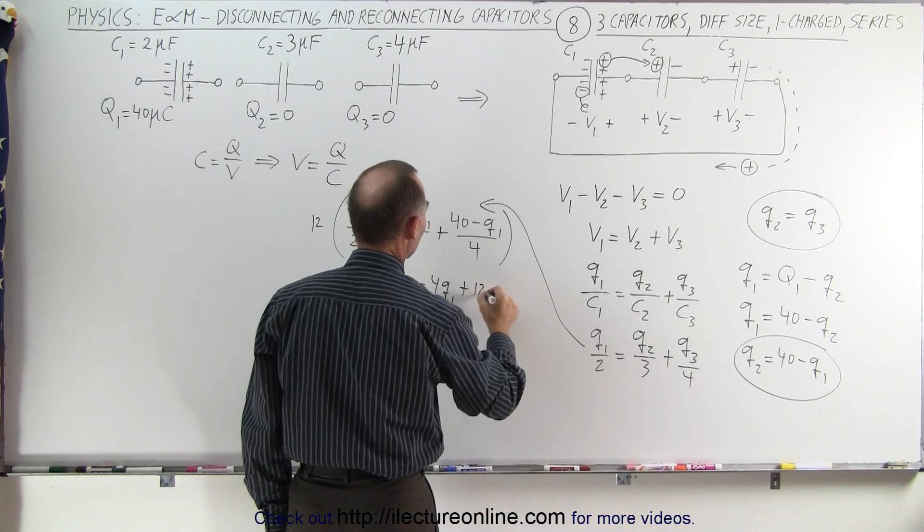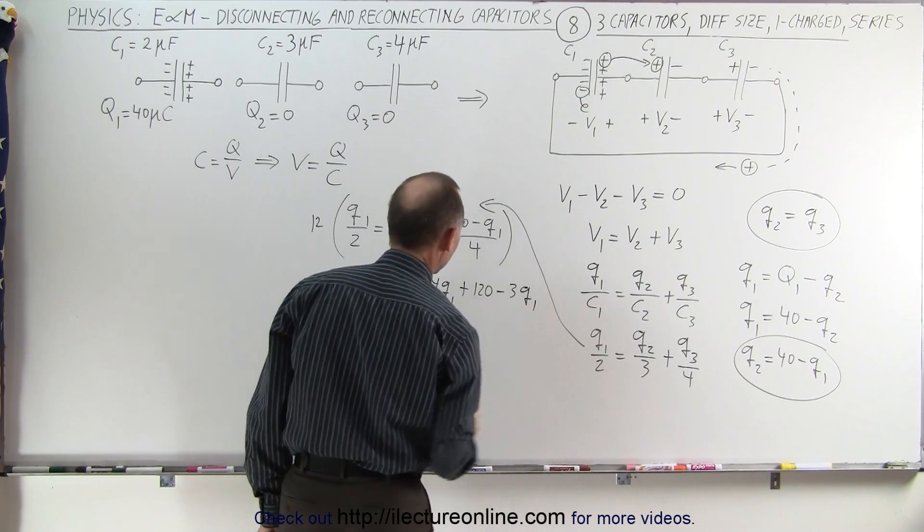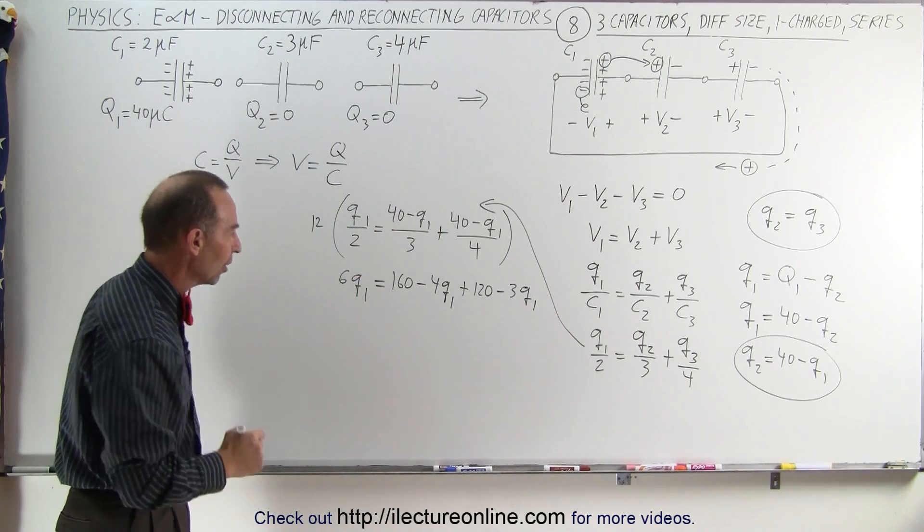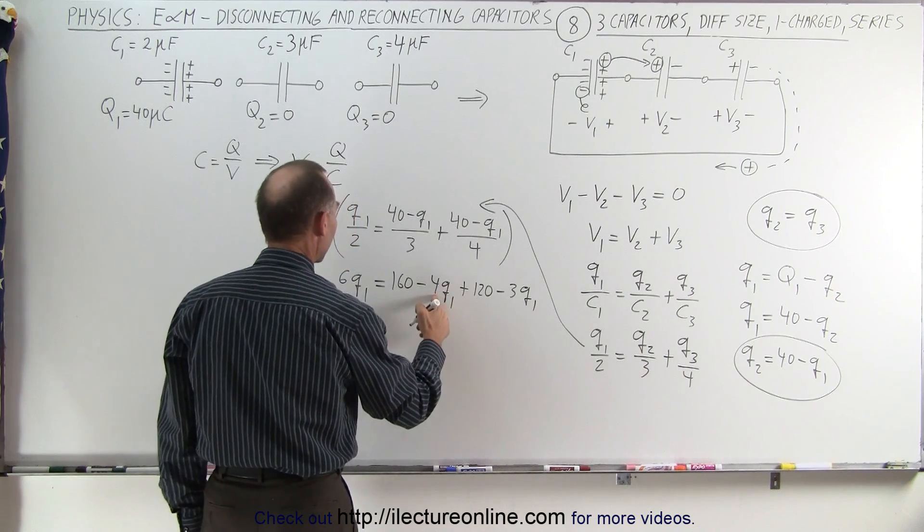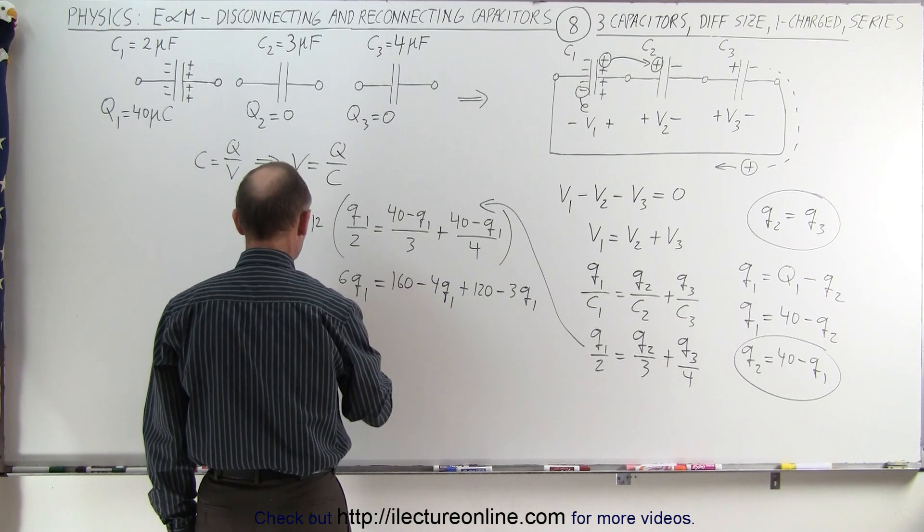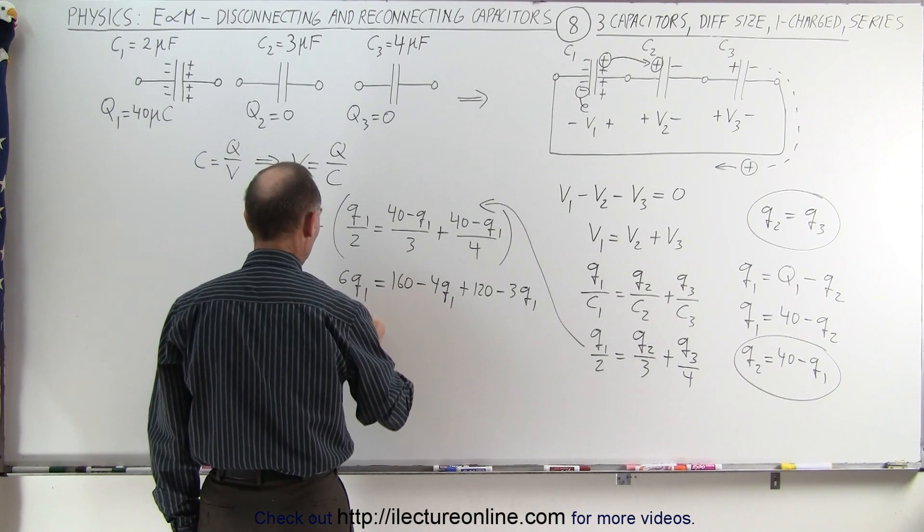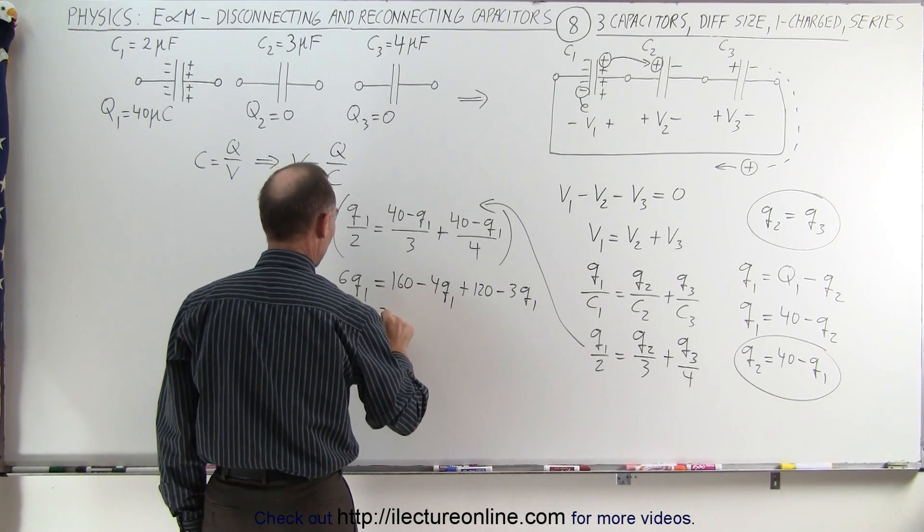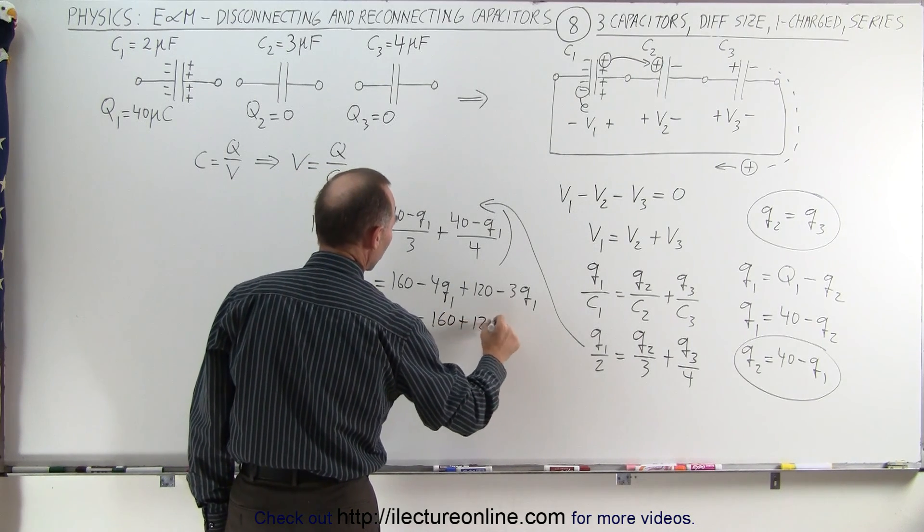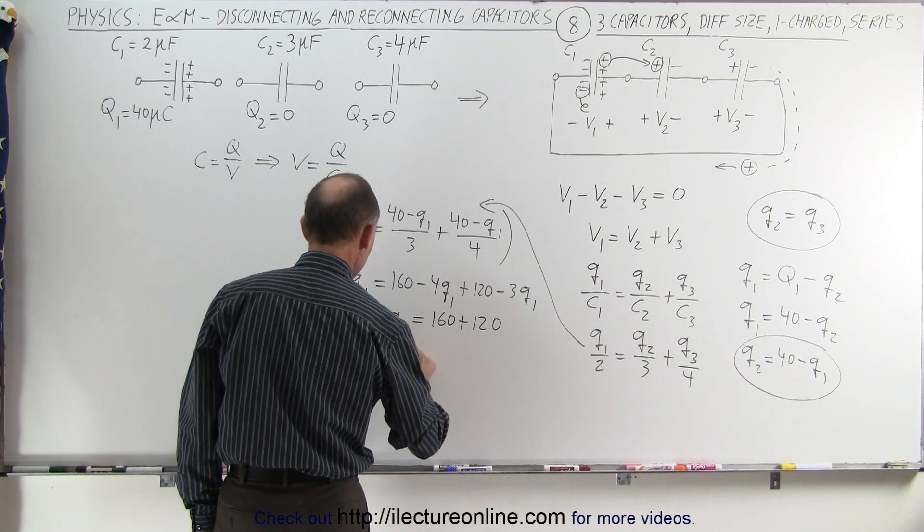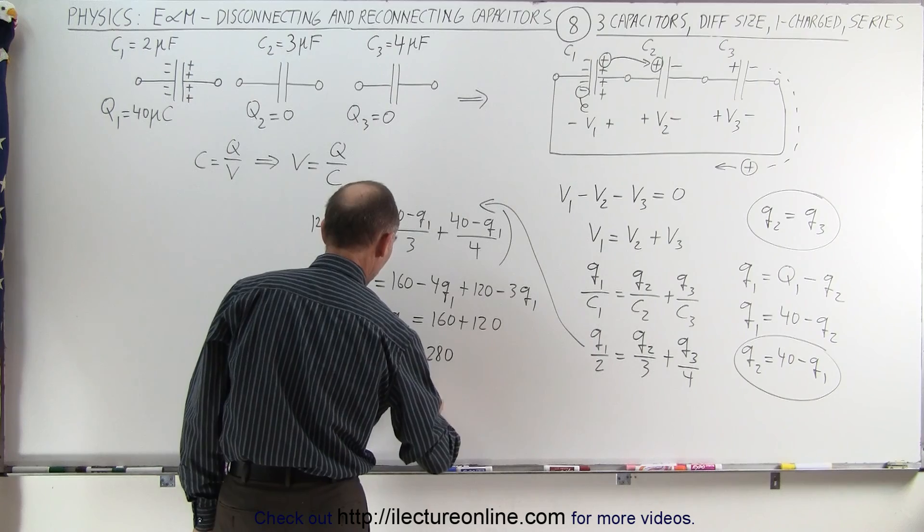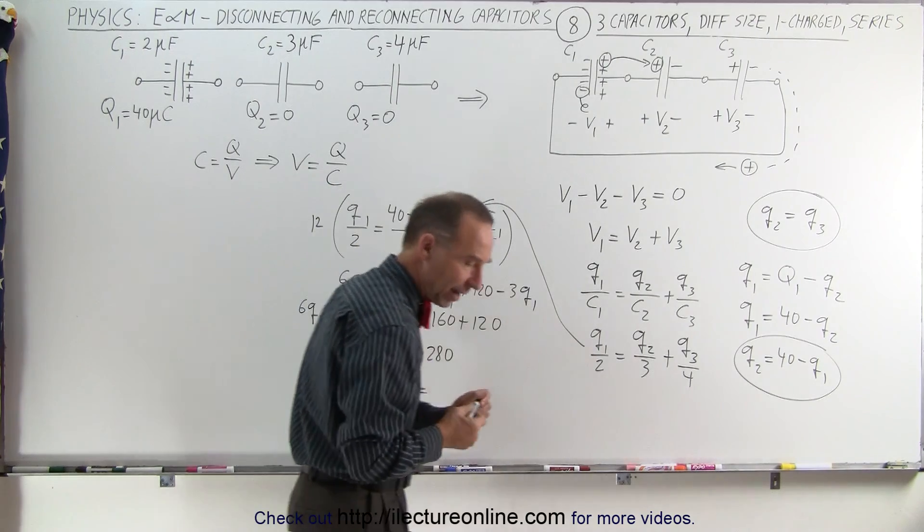Now we have an equation with just one variable Q1, we can solve for that one variable, moving all the Q1s to one side, so we have 6Q1 plus 4Q1 plus 3Q1 is equal to 160 plus 120, or 13Q1 is equal to 280, which means Q1 is equal to 180 divided by 13.